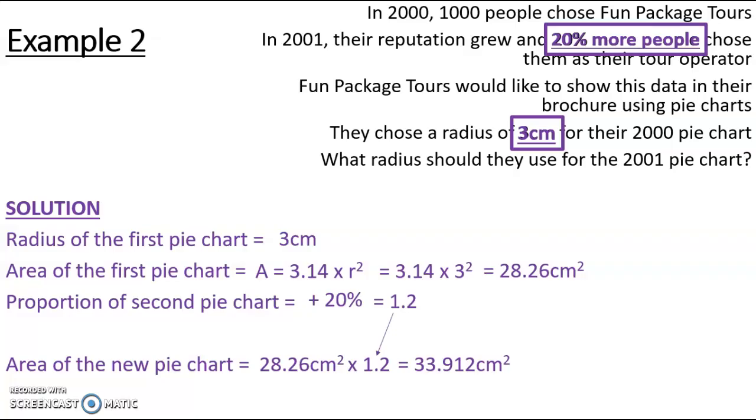Now I know my area, I can work backwards and I can get the radius. So if area is pi r squared, my area of 33.912 equals 3.14 times r squared. And again, solving that equation, I divide by 3.14 and then I square root that answer to tell me that r is 3.29.